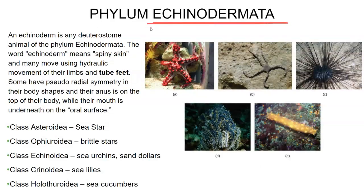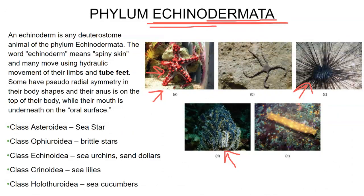Echinodermata — echinodermata means spiny dermata, meaning skin, so spiny skin. Your sea urchins, brittle stars, sea stars, and even sea lilies and sea cucumbers are part of phylum Echinodermata. They are well known for their hydraulic or water vascular system — they actually use ocean water to carry oxygen inside of their body as their vascular system. It also helps them move around by pumping water into their limbs, and they also move around on tube feet.